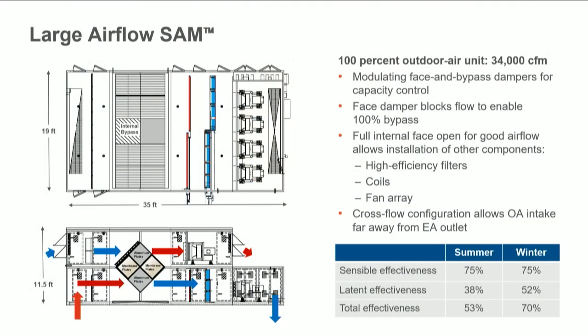For example, here is a 34,000 CFM air handler. The single SAM exchanger includes modulating face and bypass dampers for capacity control. The exchanger has a fully open internal face for good airflow to upstream and downstream components such as high-efficiency filters, coils, or a fan array. For 100% outdoor air units, the cross-flow arrangement allows for the outdoor intake to be far away from the exhaust discharge.